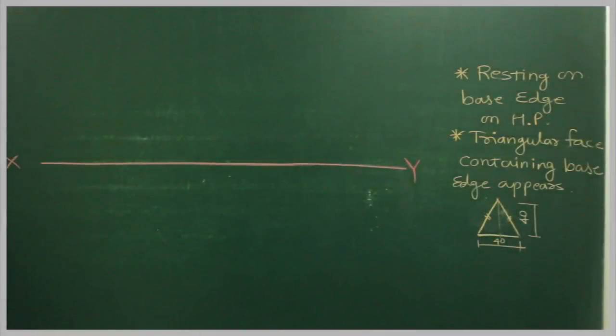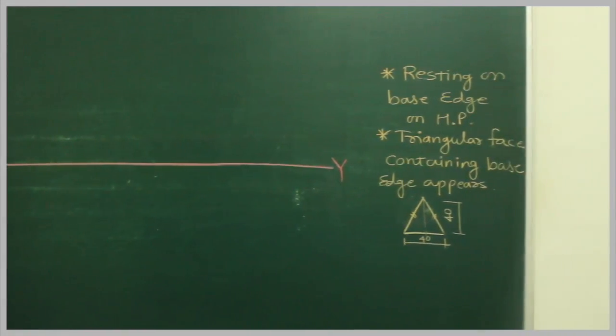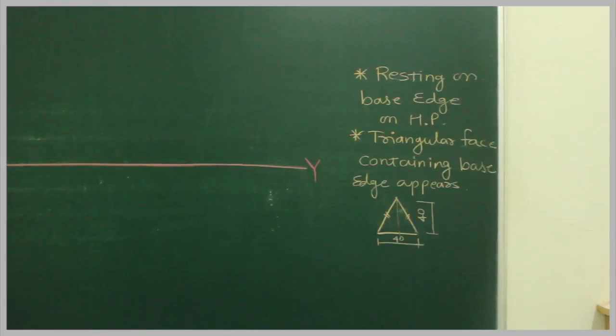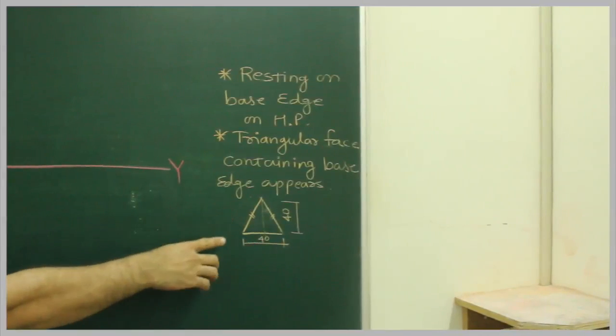In this sum, it is resting on one of its base edge on HP and the triangle of base containing that base edge appears as an isosceles triangle of base 40 and height 40, altitude 40.